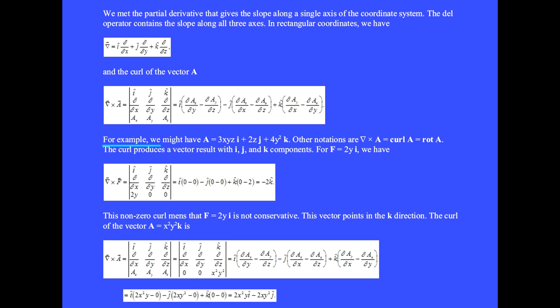For example, we might have vector A equals 3xy i-hat plus 2z j-hat plus 4y squared k-hat. Other notations are curl of A or rotation of A. The curl produces a vector result with i, j, and k components.